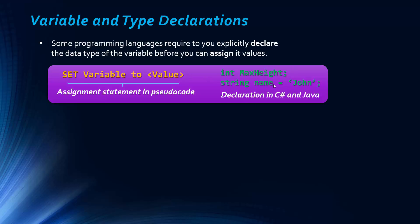And this line of code is declaring a variable called name as a string and it's assigning John to that variable. So a lot of languages allow you to do two steps in one. So you assign the initial value at the time of declaration.